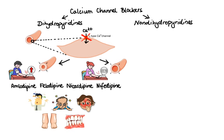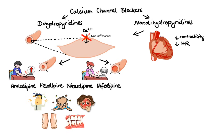Now let's move on to non-dihydropyridines, which are non-selective inhibitors of L-type calcium channels. In other words, they are not only capable of blocking calcium channels on vascular smooth muscle, but also calcium channels on cardiac cells such as those of the SA node and AV node, which leads to reduced myocardial contractility, slower heart rate and slower conduction. That's why these agents exhibit significant antiarrhythmic properties. For more details, make sure you check out my video about antiarrhythmic drugs.